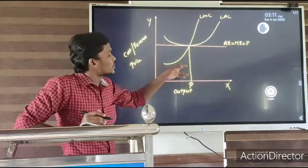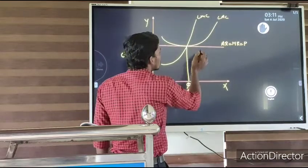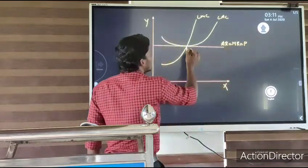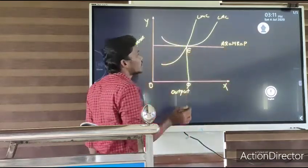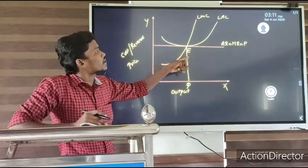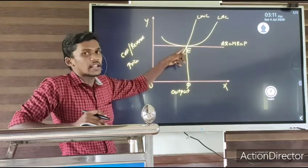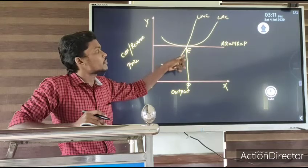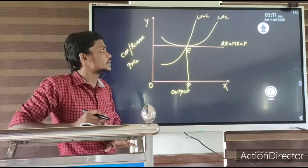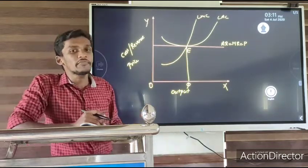This is the equilibrium point. At this point, AR is equal to MR, which is equal to P, and that is equal to LMC. So that is the optimum level of output of the firm.